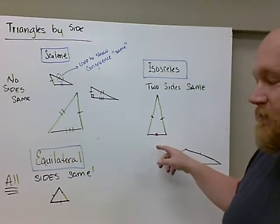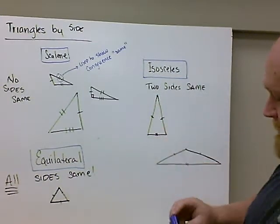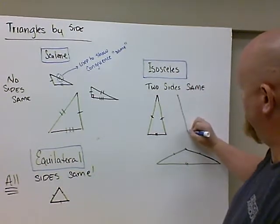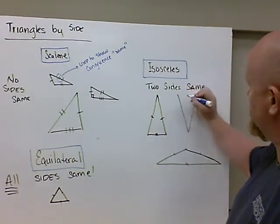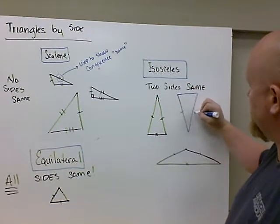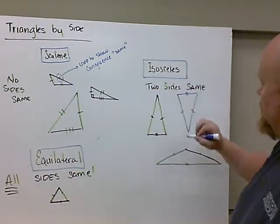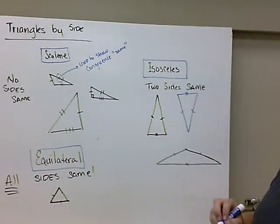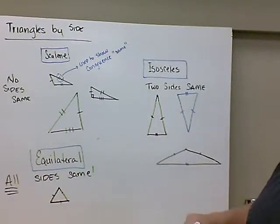Now, isosceles triangles have two sides that are the same. Remember, the orientation of my triangles, these could be a V. It could be upside down if I wanted to, as long as they were the same sides. That side's the same, this to this side, and this is a different length side. These measurements are the same.